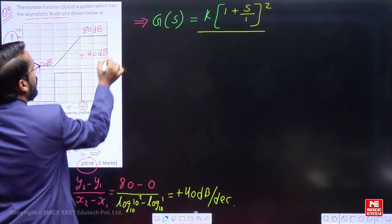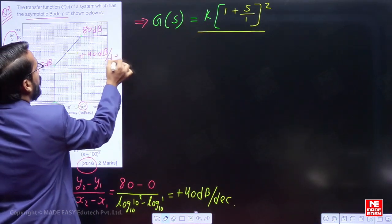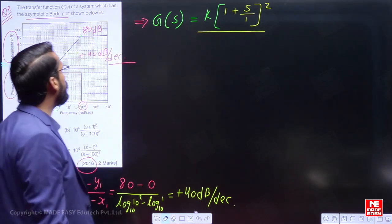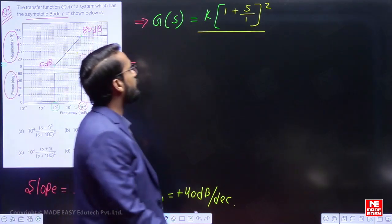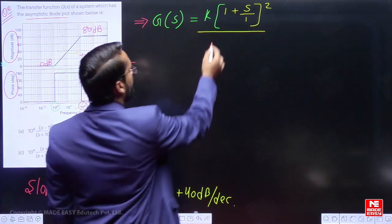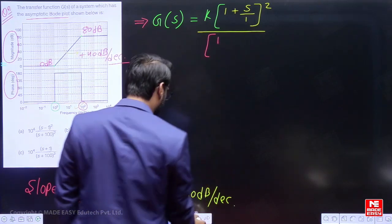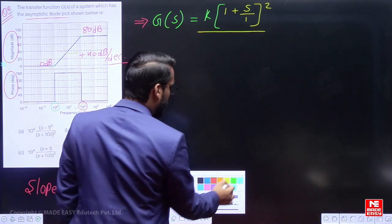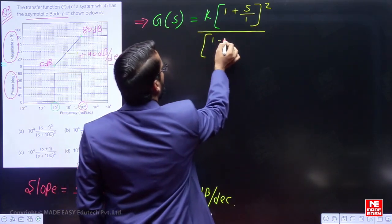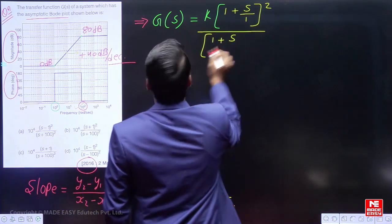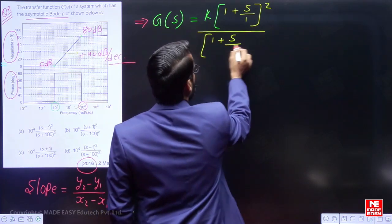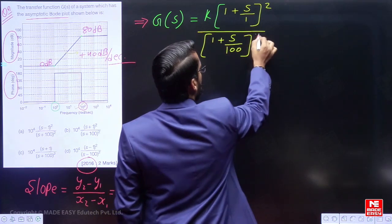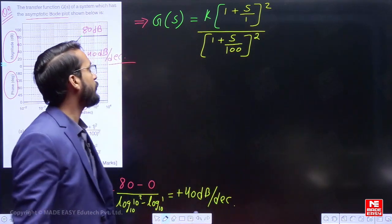The slope is going to change from +40 dB per decade to 0 dB per decade, meaning 2 poles are going to be introduced with respect to the corner frequency 100, giving us (s/100)² in the denominator — that is 2 poles.